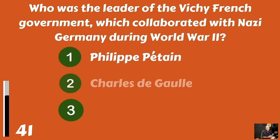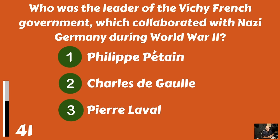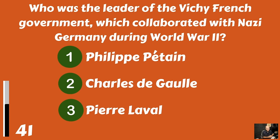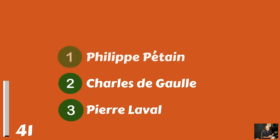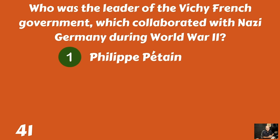Who was the leader of the Vichy French government, which collaborated with Nazi Germany during World War II? Philippe Pétain? Charles de Gaulle? Or Pierre Laval? Philippe Pétain.